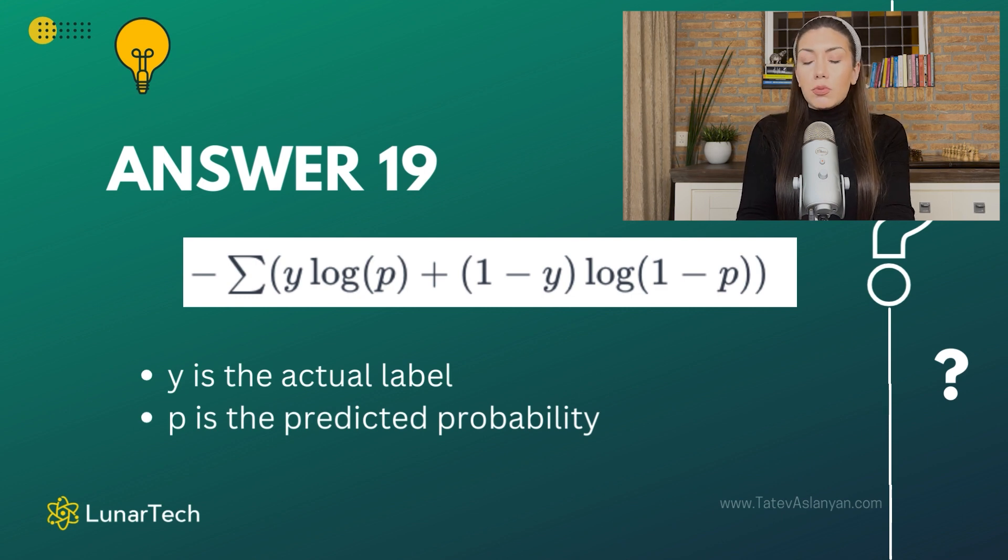In all those cases when you are dealing with this type of problem, you can apply the cross-entropy as a loss function. Cross-entropy is measured as the negative of the sum of y log(p) plus (1 - y) log(1 - p), where y is the actual label. In binary classification, this can be for instance 1 and 0, and then p is the predicted probability.